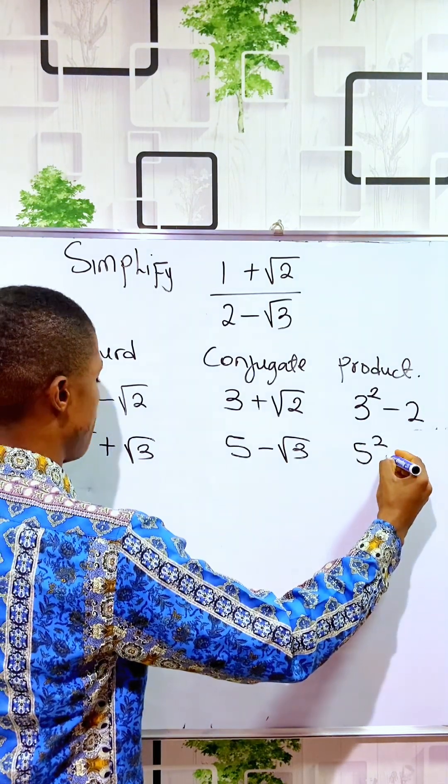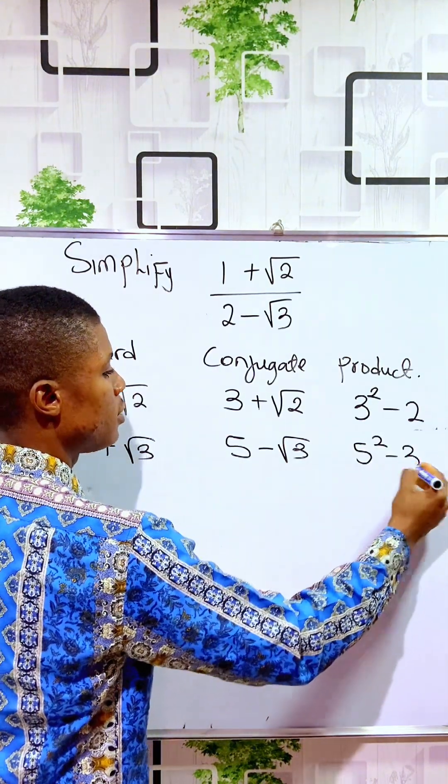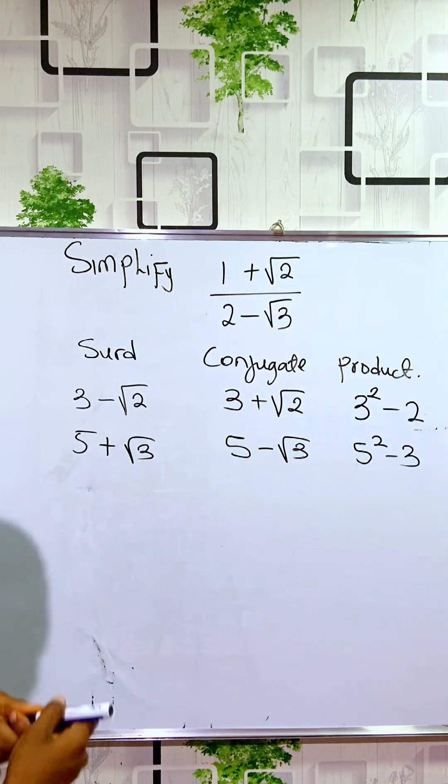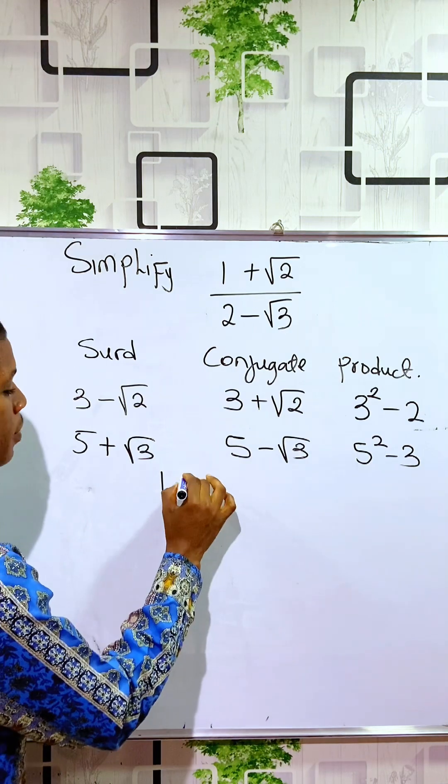So let's apply it here to solve the question: 1 + √2 divided by 2 - √3.